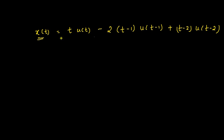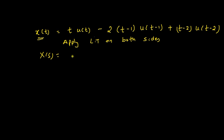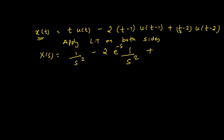Now we need to find the Laplace transform. Applying the Laplace transform on both sides gives us: X(s) equals the Laplace transform of t·u(t), which is 1/s². The Laplace transform of (t−1)·u(t−1) is e^(−s)·(1/s²). Then the Laplace transform of (t−2)·u(t−2) is e^(−2s)·(1/s²).